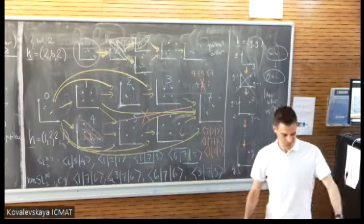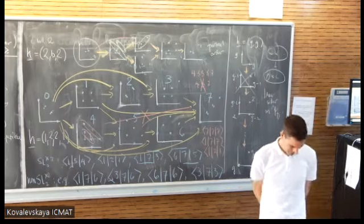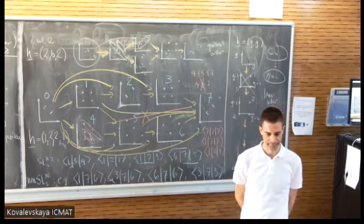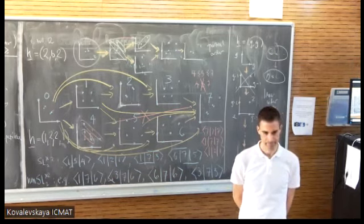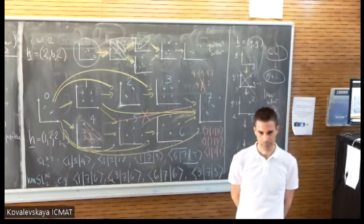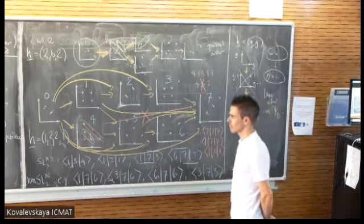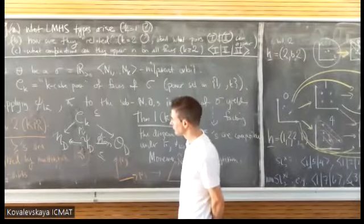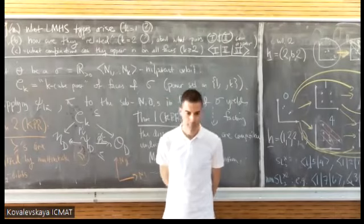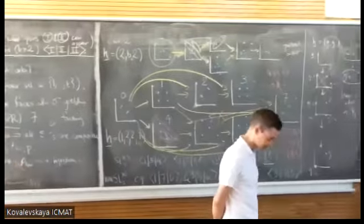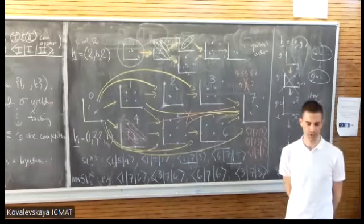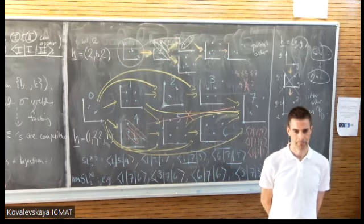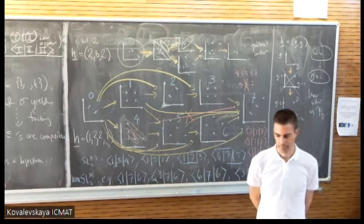Coming back to the classification: you showed essentially that the whole classification can be done in the SL2 picture. The SL2 picture is very clean — it's just raising and lowering operators, computing pairs of SL2's. So where is the complication hidden in the order structure? You see what all the possible polarized relations are given by the yellow arrows, and then you just see that it's not transitive. It's bizarre, but that's the way it is.